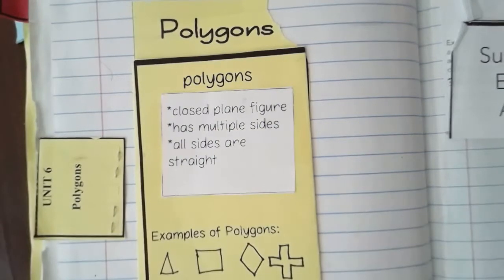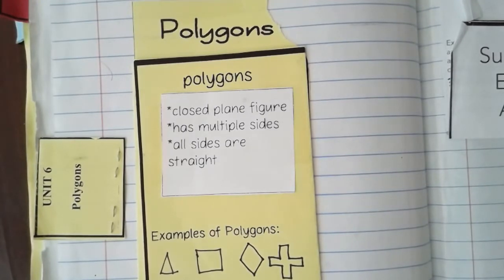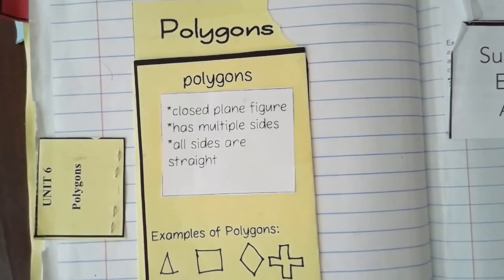This next unit we're going to be covering is unit six, which covers polygons. First we'll talk about what a polygon is, and then we'll go more in depth, more specifically with four-sided polygons, also known as quadrilaterals.